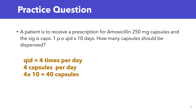First thing we need to do is figure out what the sig means. So 1 PO QID for 10 days — PO stands for by mouth, and QID stands for four times a day. So if you are taking one capsule four times a day, how many capsules are you taking per day? Four capsules — that's correct. One capsule four times a day means you're taking four capsules total per day.